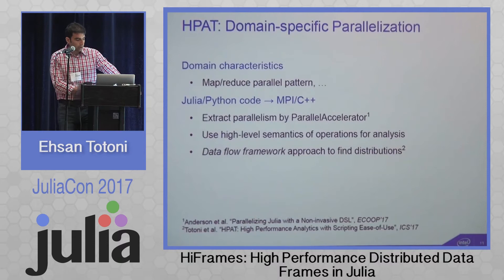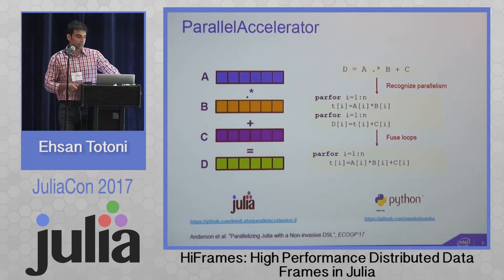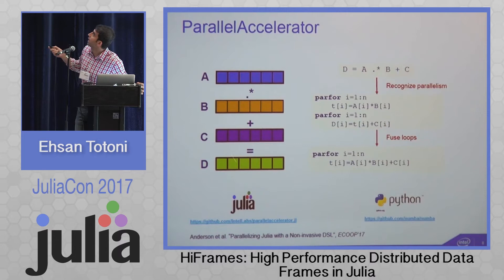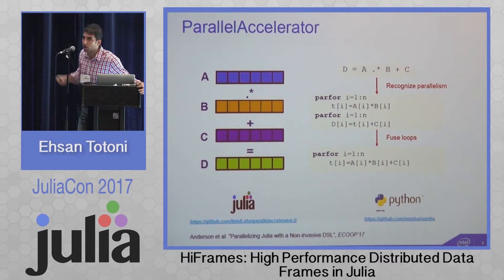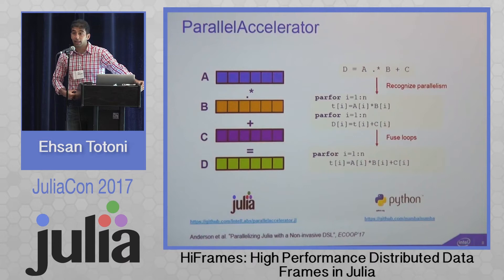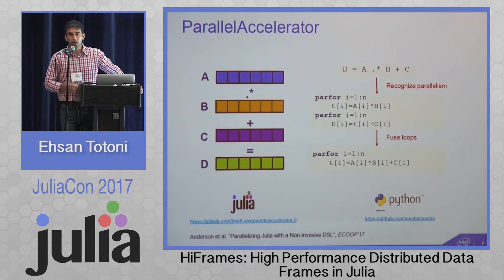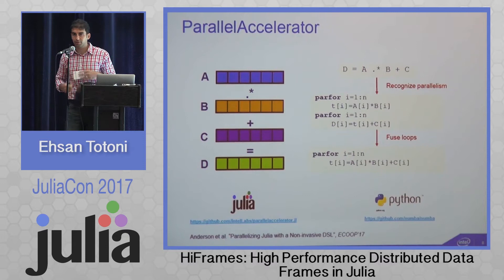How does Parallel Accelerator work? Given a data-parallel array expression — for example element-wise multiplication of arrays A and B plus element-wise addition with C — Parallel Accelerator recognizes the parallelism and generates constructs called par-fors (data-parallel for loops). It then fuses these loops to eliminate intermediate values and reduce memory accesses, which is critical for cache performance. Finally it generates OpenMP output code. These par-fors are our starting point for building HPAT and HiFrames.